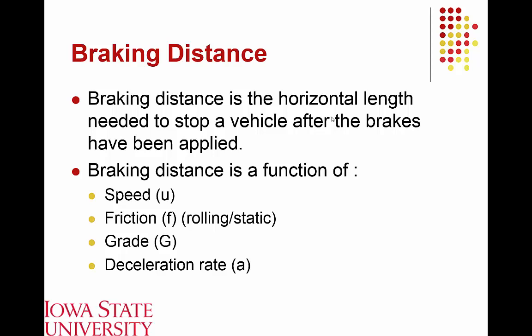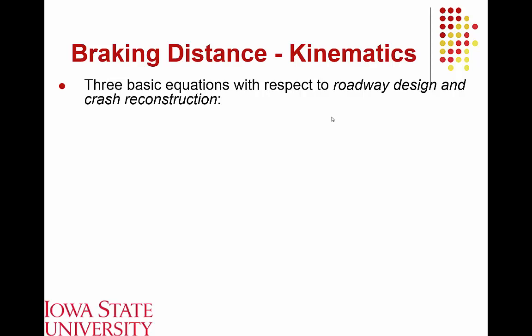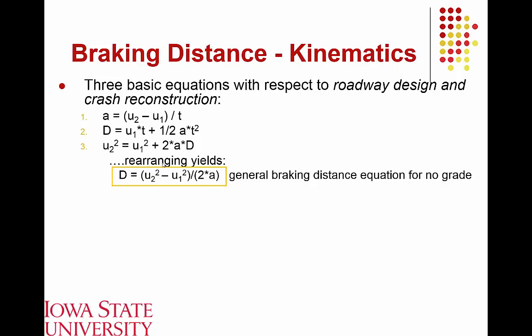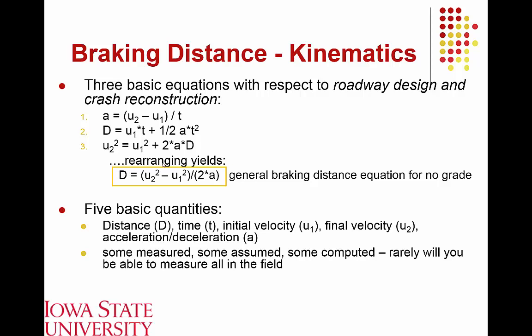To calculate braking distance, we use fundamental kinematics equations from physics: acceleration a = (V_f − V_i) / t; distance d = V_i·t + ½·a·t²; and V_f² = V_i² + 2·a·d. Rearranging these, the braking distance on a level grade is simply the difference in initial and final speeds squared divided by 2 times the deceleration rate. We will typically measure some quantities, assume others, and compute the rest, as it is rare to measure all of them in the field.